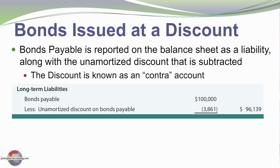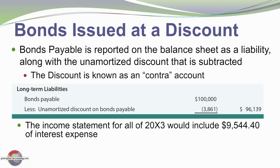On the balance sheet at any particular date — in this case at the end of 20X3 — we show bonds payable of $100,000 less the unamortized discount, which is a contra account to bonds payable, for a net book value of $96,000. The income statement for that year would report interest expense of $9,544 — that's two six-month periods at $4,772 per period.